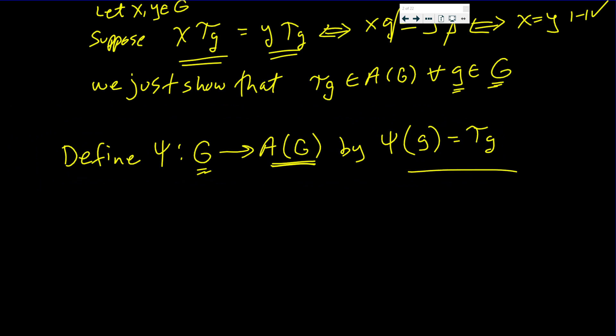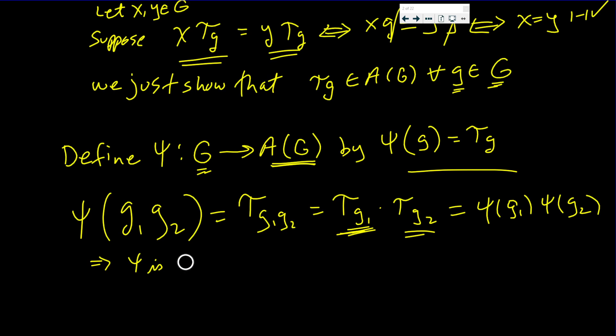Well is it a homomorphism? Yes. Because φ(g₁g₂) is equal to τ_g₁g₂ which we showed is equal to τ_g₁ times τ_g₂. This here is φ(g₁) and this here is φ(g₂). This implies that φ is a homomorphism.